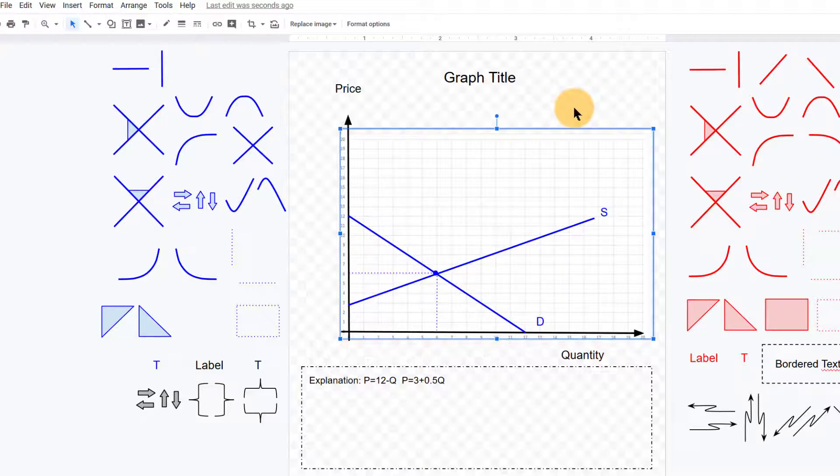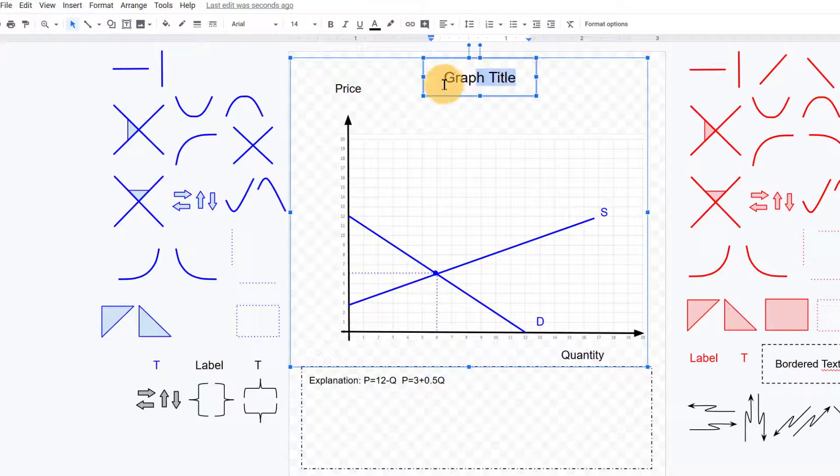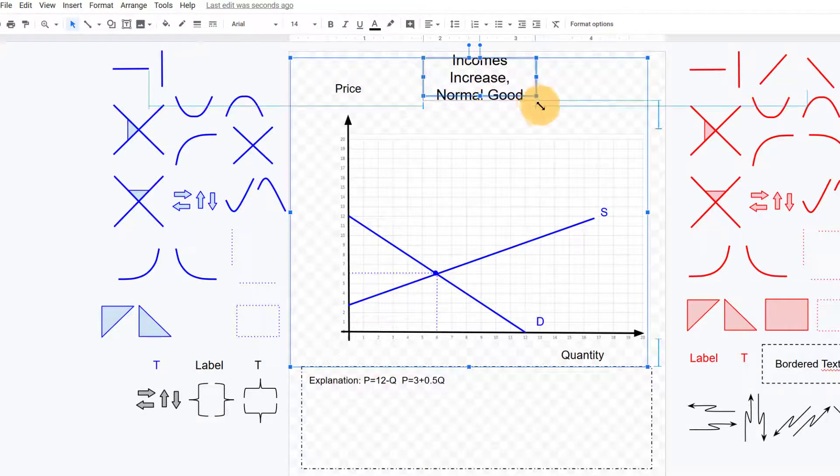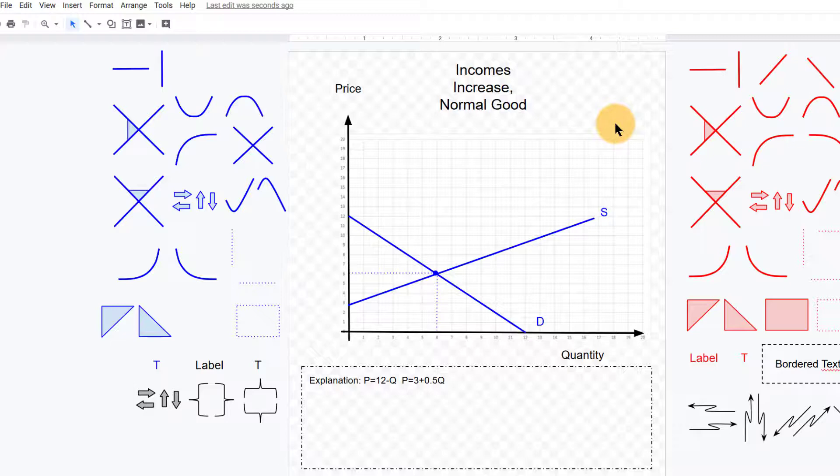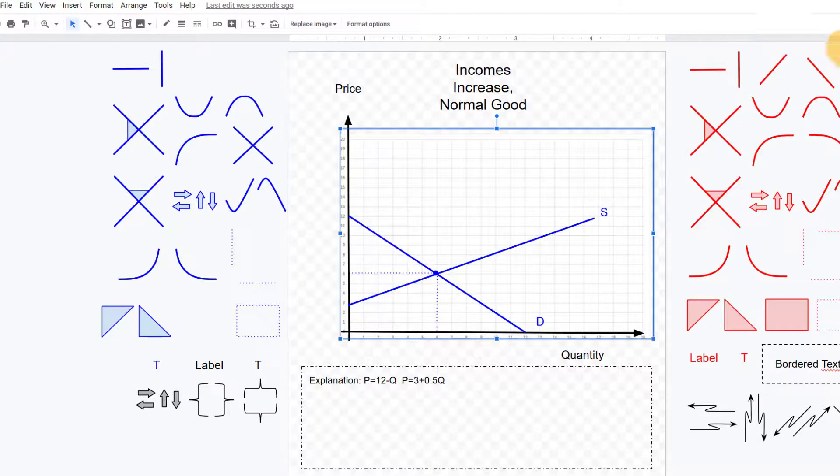So here's our scenario: that people's incomes increase in a state or in a nation, and we're talking about a normal good, one where demand increases as incomes increase.